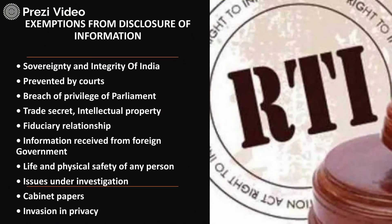Some organizations were provided exemptions because not all organizations can be covered in the act due to security and national integrity issues. Organizations related to sovereignty and integrity of India — where security is the primary concern — were given exemptions. These include: courts, breach of privilege of Parliament, trade secrets, intellectual property, fiduciary relationships, organizations receiving foreign government funding, life and physical safety of any person, matters under investigation, cabinet papers, and issues involving privacy.